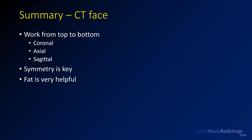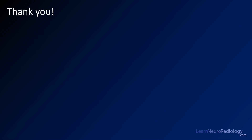In summary, when looking at a CT of the face, take a regimented approach going from top to bottom. Start with the coronals and then lean heavily on the axials. The sagittals are good for troubleshooting but trickier because you don't have symmetry to depend on. Symmetry is key — look for asymmetry of the bones and adjacent fat. Fat is extremely helpful: if you've got clean fat planes and normal fascial planes, you're much less likely to have an abnormality. Thank you for tuning in to Learn Neuroradiology. Feel free to check out our other videos on YouTube or visit our website at LearnNeuroradiology.com.